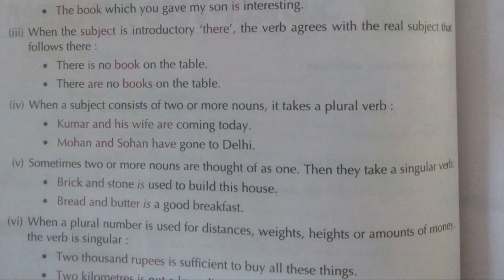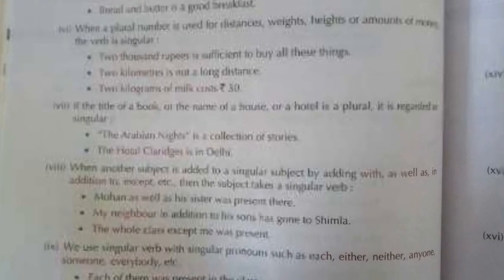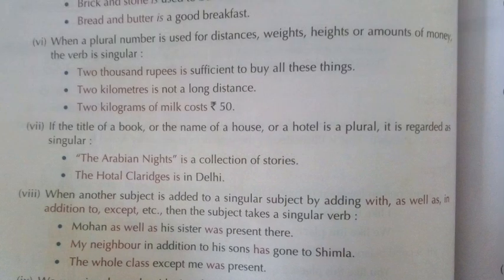Rule six: when a plural number is used for distance, weight, height, or amount of money, the verb is singular. Many people make mistakes here. 'Two thousand rupees' — it looks plural, but because it expresses an amount of money, the verb is singular: 'Two thousand rupees is sufficient to buy all these.' 'Two kilometers is not a long distance.' 'Two kilograms of milk costs' — 'costs' is used because it is singular. Remember: distance, weight, height, and money amounts always take a singular verb.